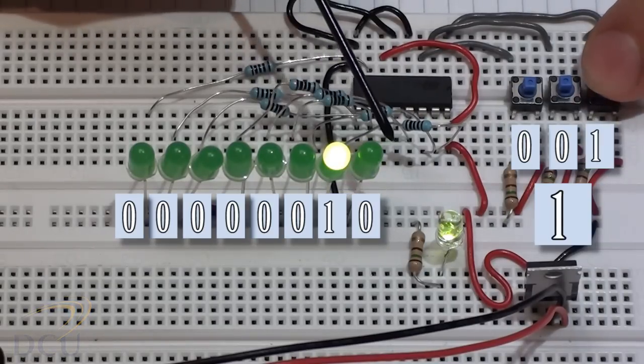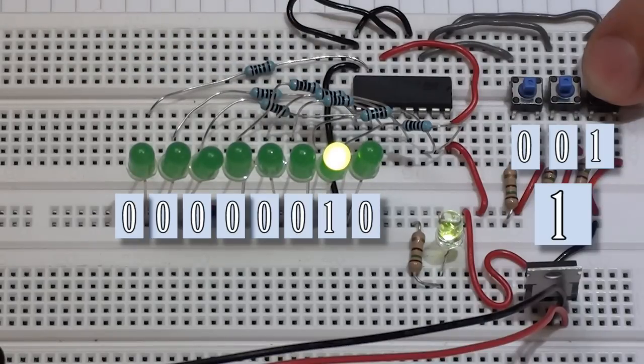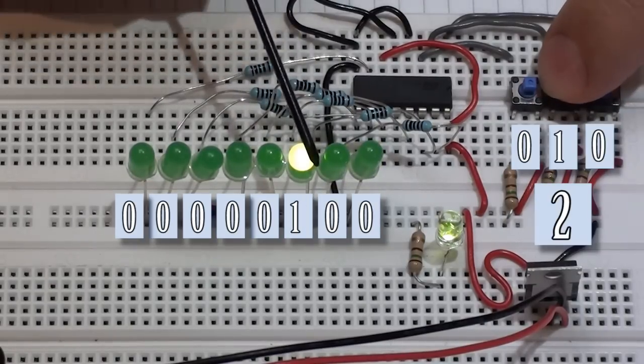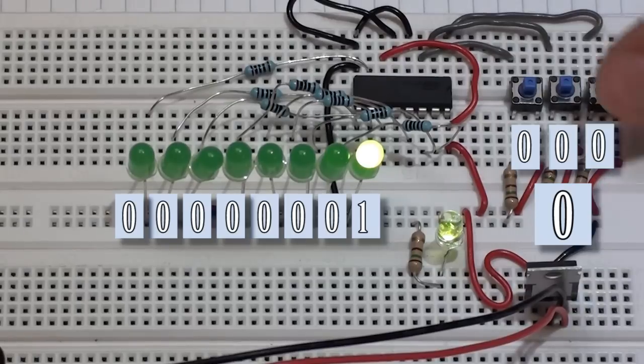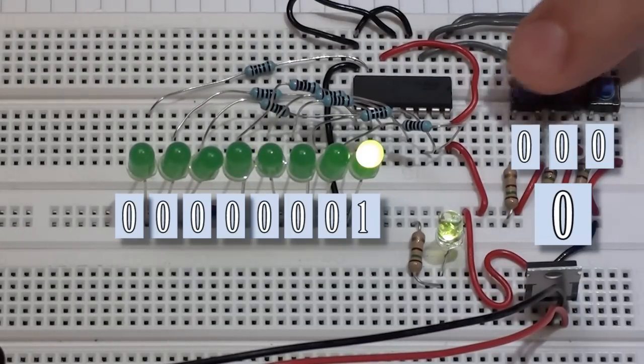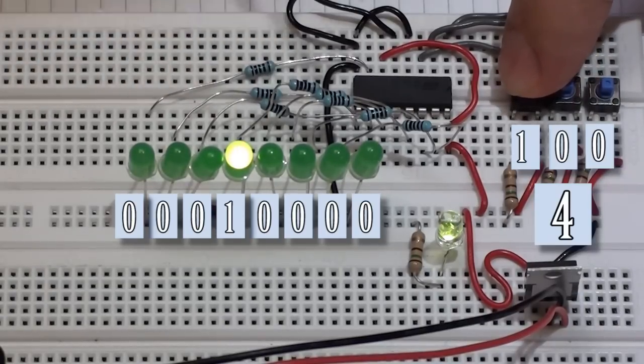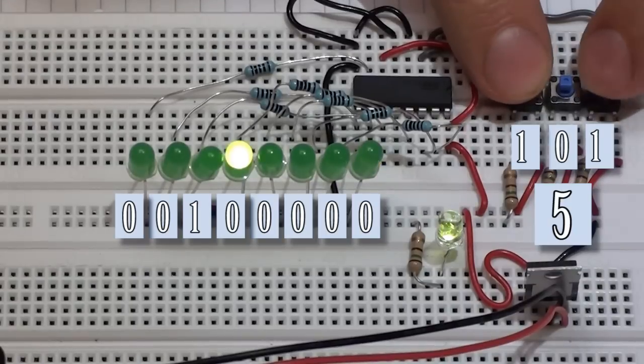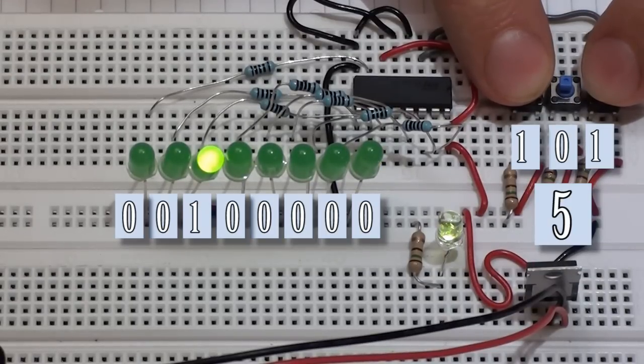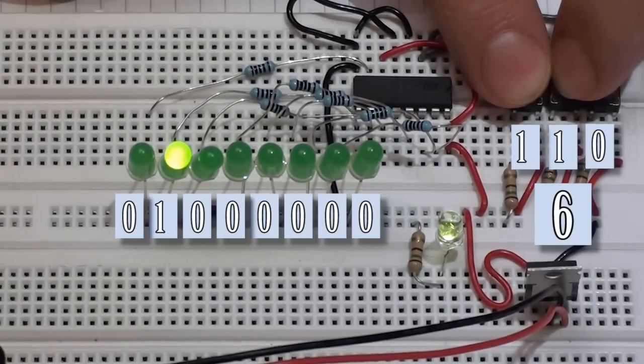When I press the first button, this lights up the second LED. Press the second button, the third LED lights up. Press the first two buttons at the same time, the fourth LED lights up. Press the last button on its own, the fifth LED lights up. The last button plus the first button gives me the sixth LED. The last button plus the middle button gives me the seventh LED.